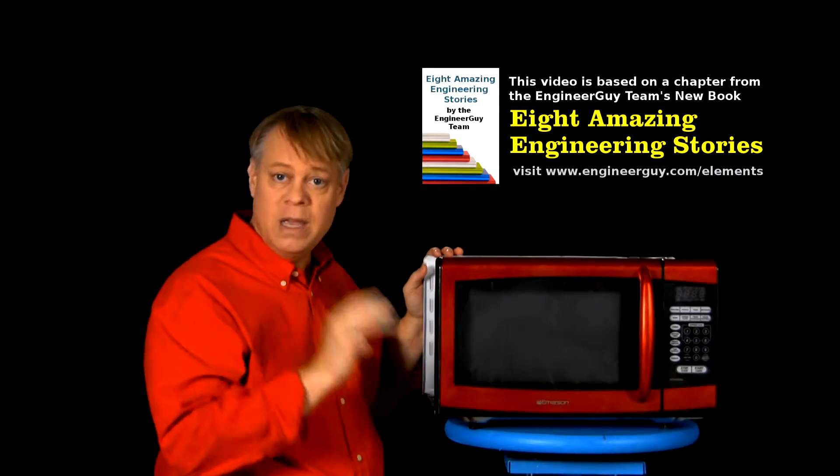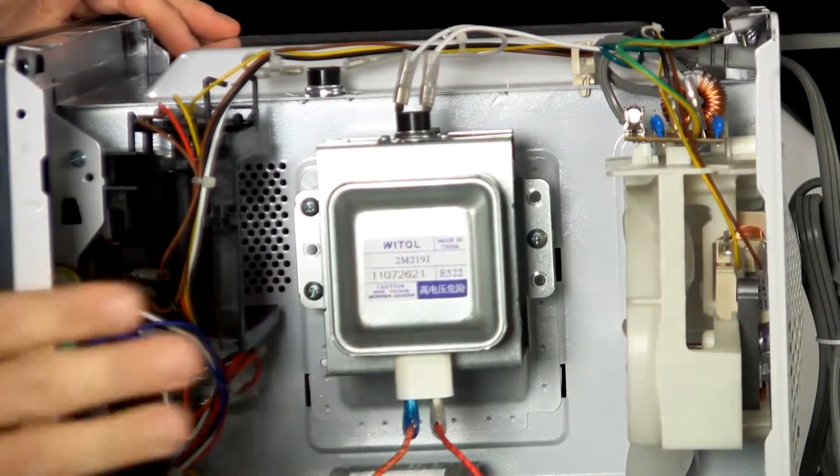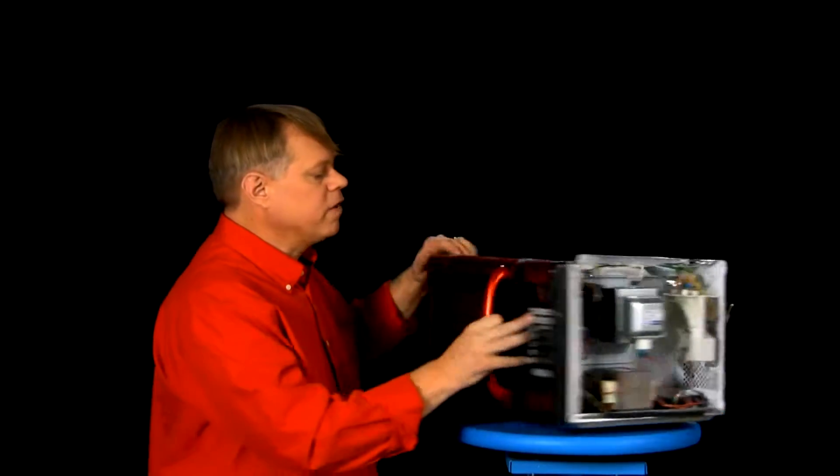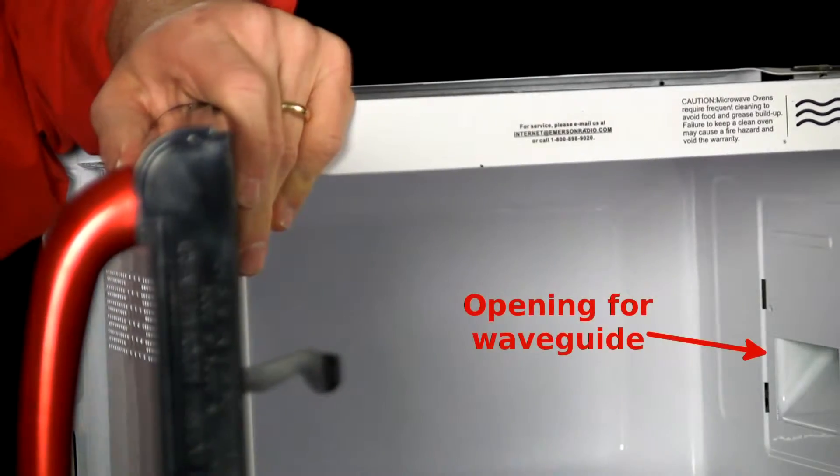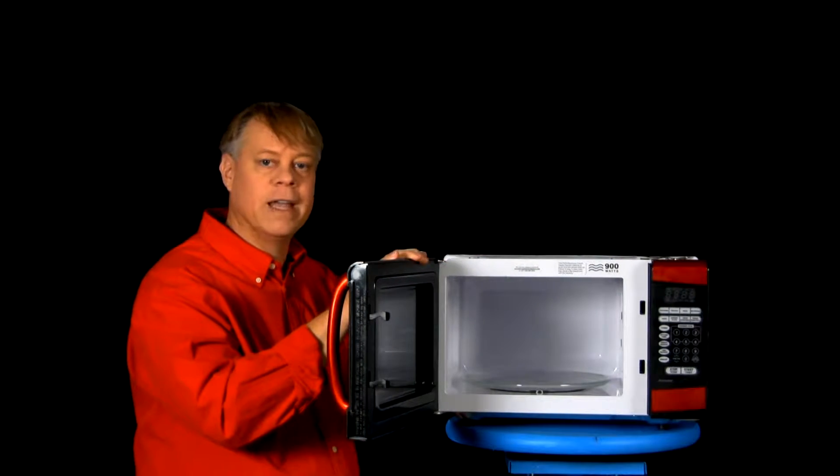Now a microwave contains three main components: a vacuum tube called a magnetron that generates the energy that heats food, a waveguide hidden in the wall to direct that energy to the food, and a chamber to hold the food and safely contain the microwave radiation.